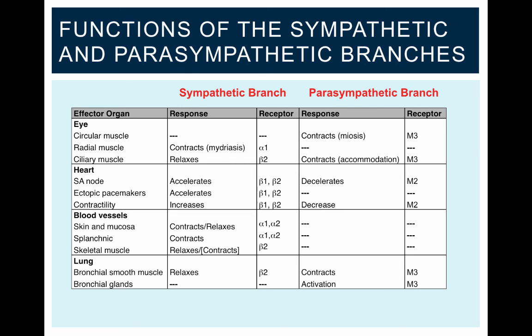Beta-1 receptors, on the other hand, as I mentioned a moment ago, are located in the heart. You see there are beta-1 receptors located in the SA node, ectopic pacemakers. Beta-1 receptors also control contractility of the heart.